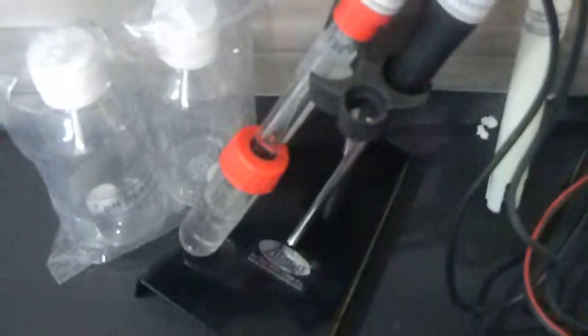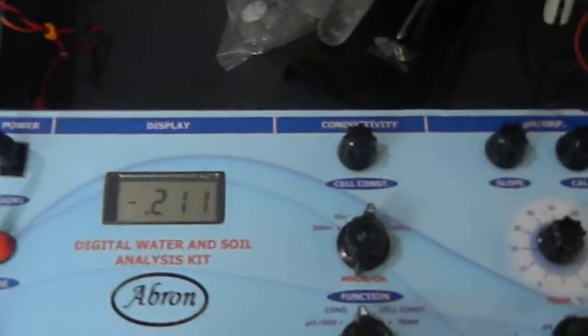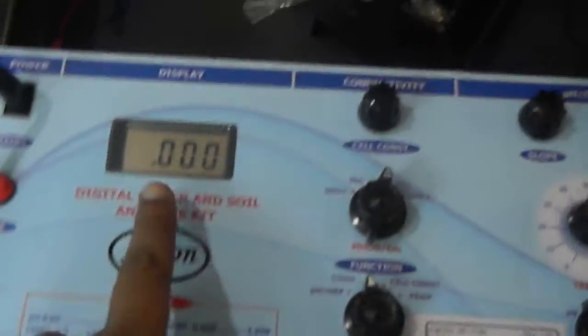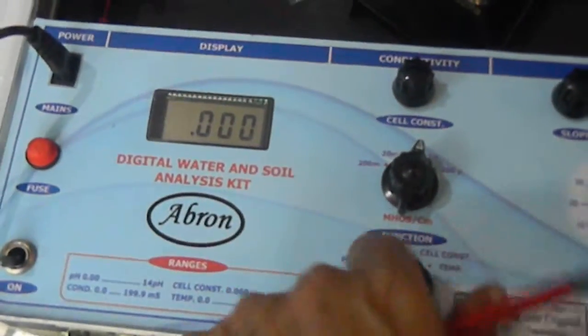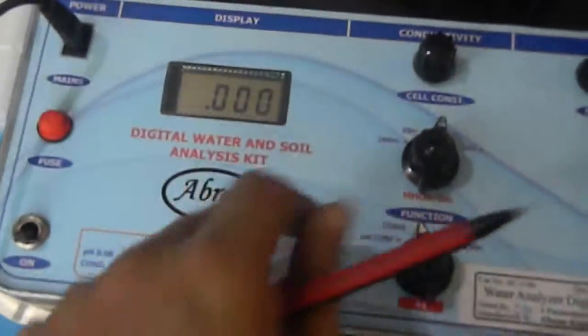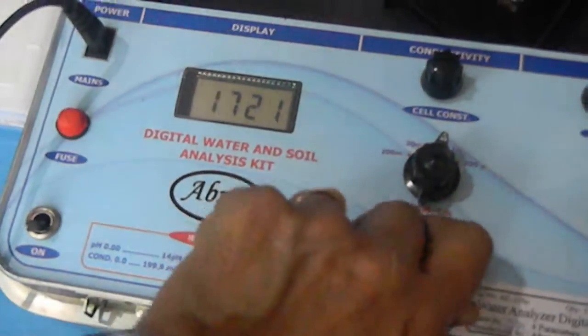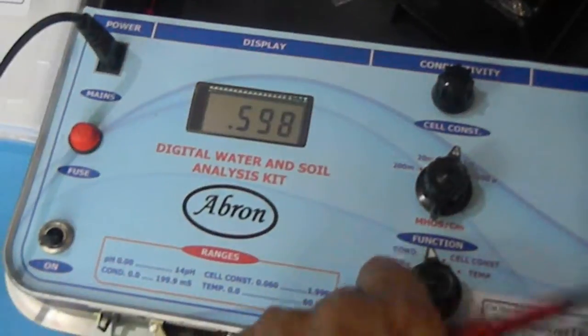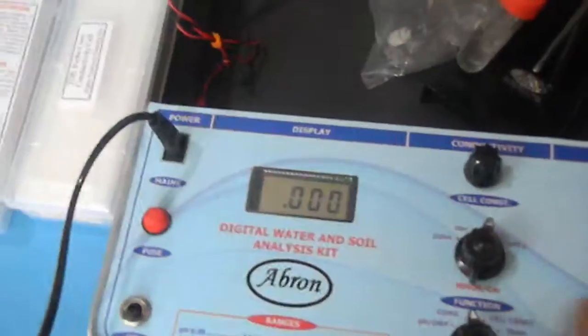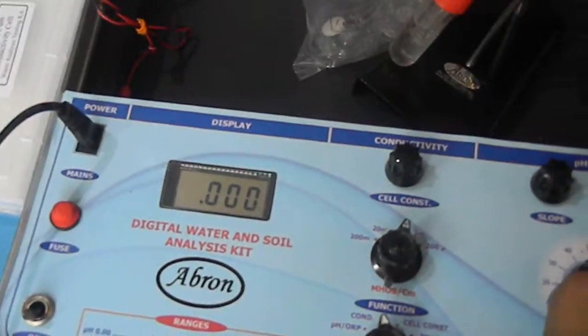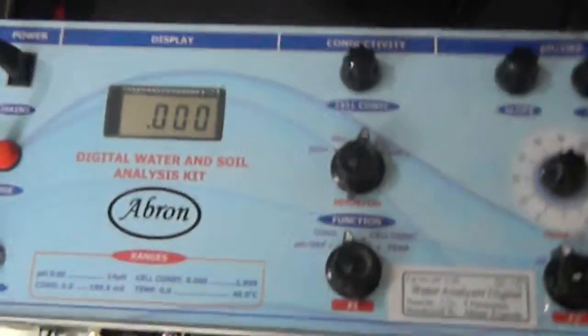Then to start with, you select this conductivity mode. When you go with the conductivity mode the value is visible. This mode gives you the conductivity.